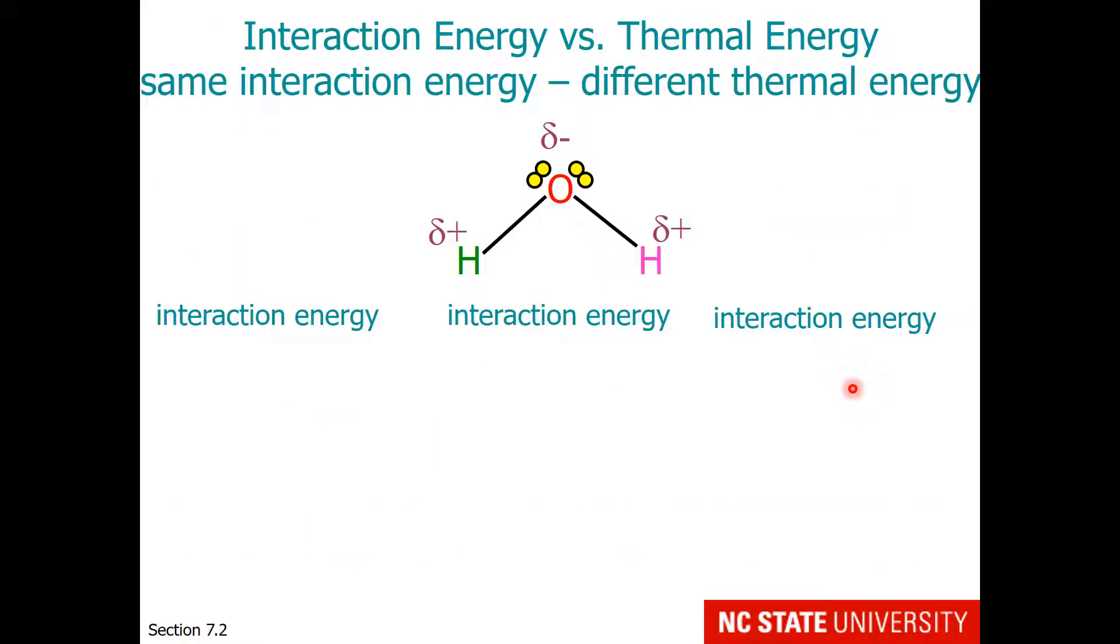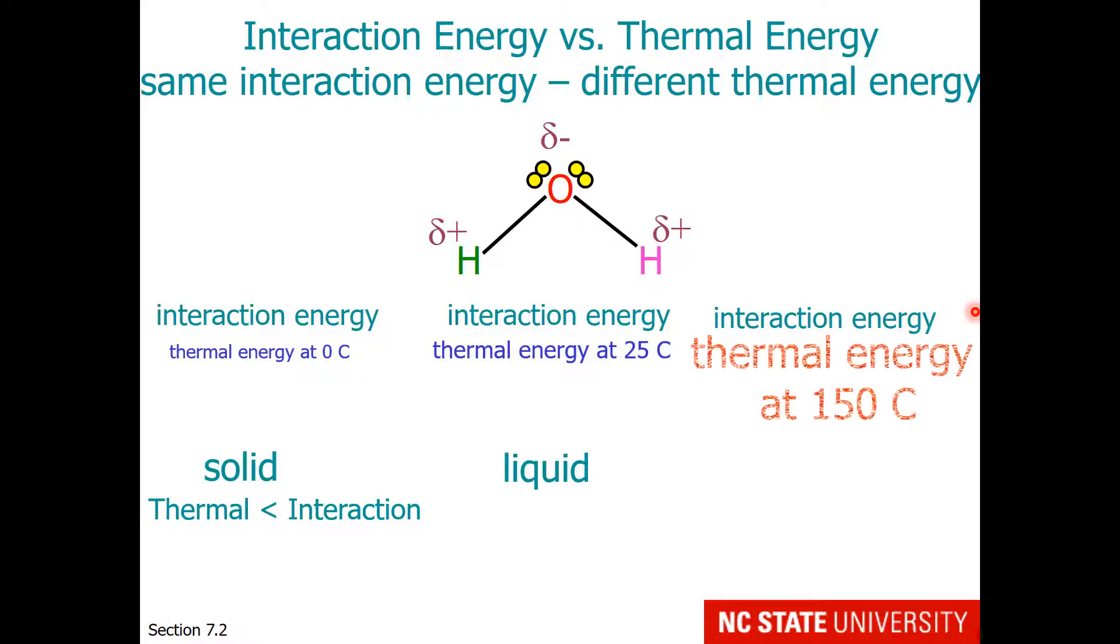Of course water isn't always a liquid. Although water molecules have interaction energy with one another, the thermal energy can vary. So I have our typical water molecule with a bond angle of approximately 109 degrees and partial charges. If very little thermal energy is available, water is a solid. So when thermal energy is much less than interaction energy, the typical state of matter is a solid. When the two are roughly balanced, we have a liquid. And when you greatly increase thermal energy, we get a gas, which is water vapor. So when interaction energy is much less than thermal energy, then we have a gas. Hopefully that makes sense.